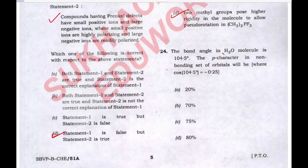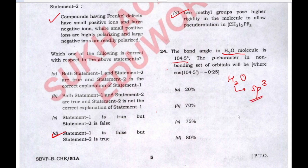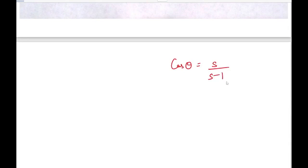In the next question, the bond angle in the water molecule is 104.5 degrees. We need to find the P character of the non-bonding set of orbitals. If water has SP3 hybridization, there are two non-bonding pairs. We first calculate the S character using the relation cos θ = −0.25, which gives a value for the S character of one O-H bond.